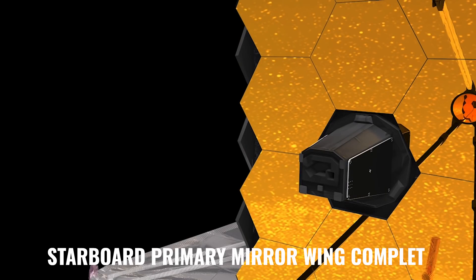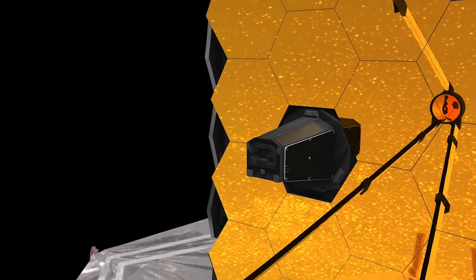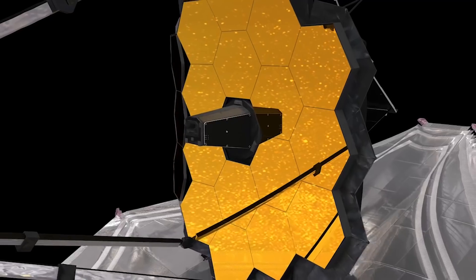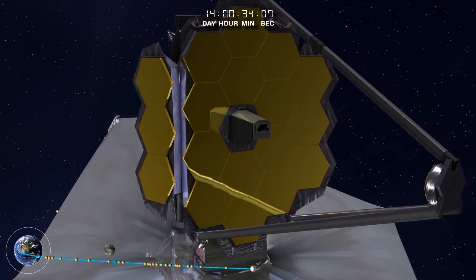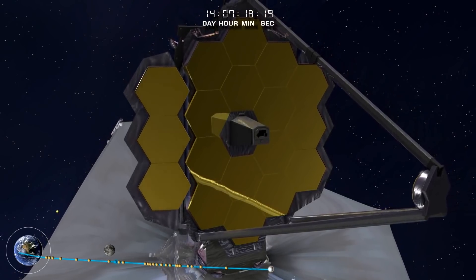Starboard primary mirror wing complete. The starboard primary mirror wing is fully deployed and latched. The right starboard minus V2 wing of the primary mirror is fully deployed and latched.